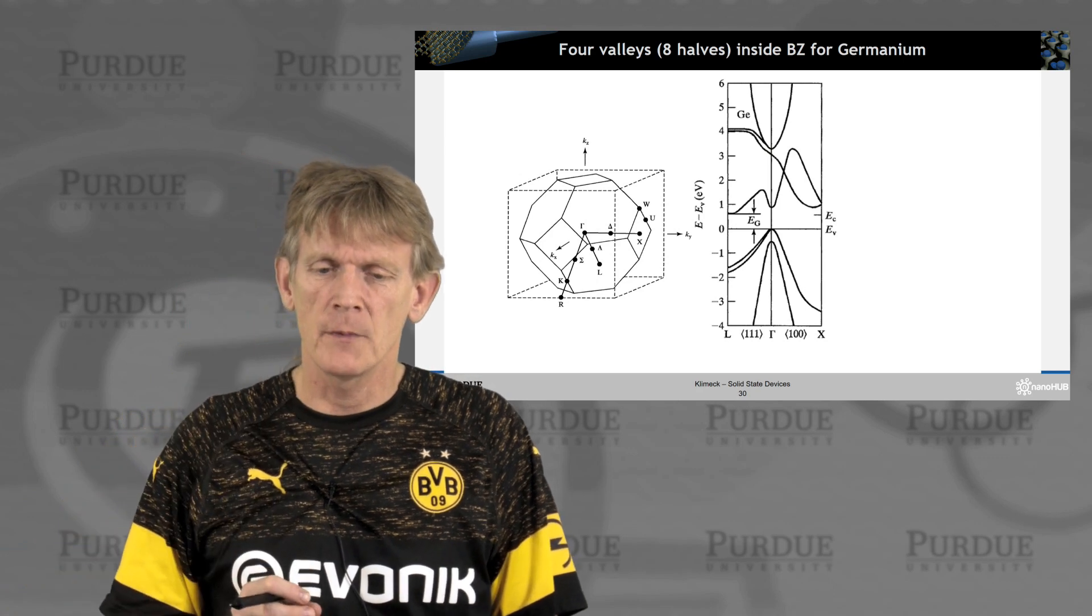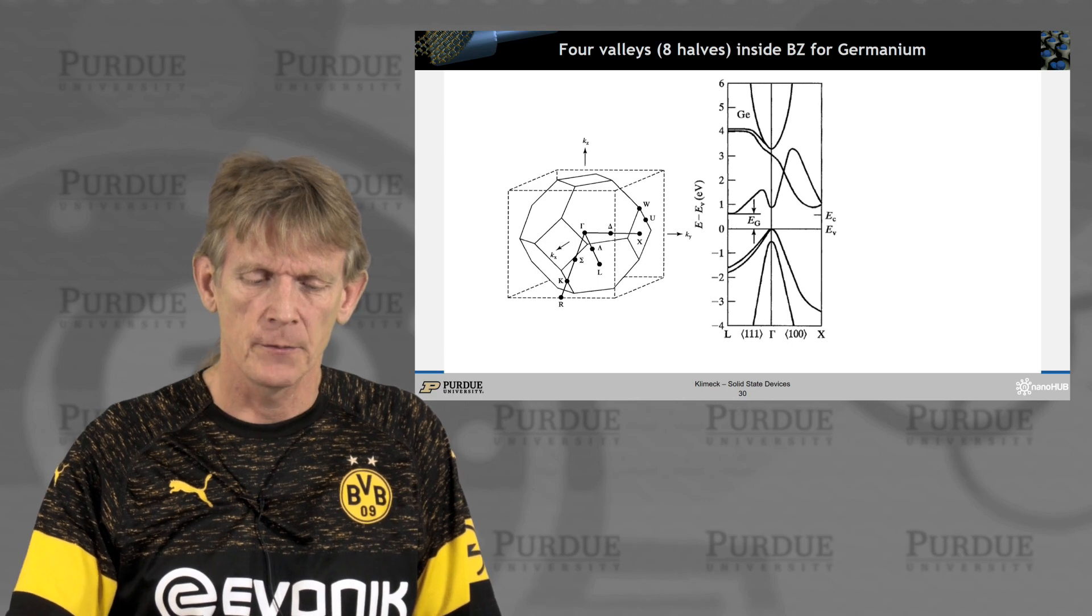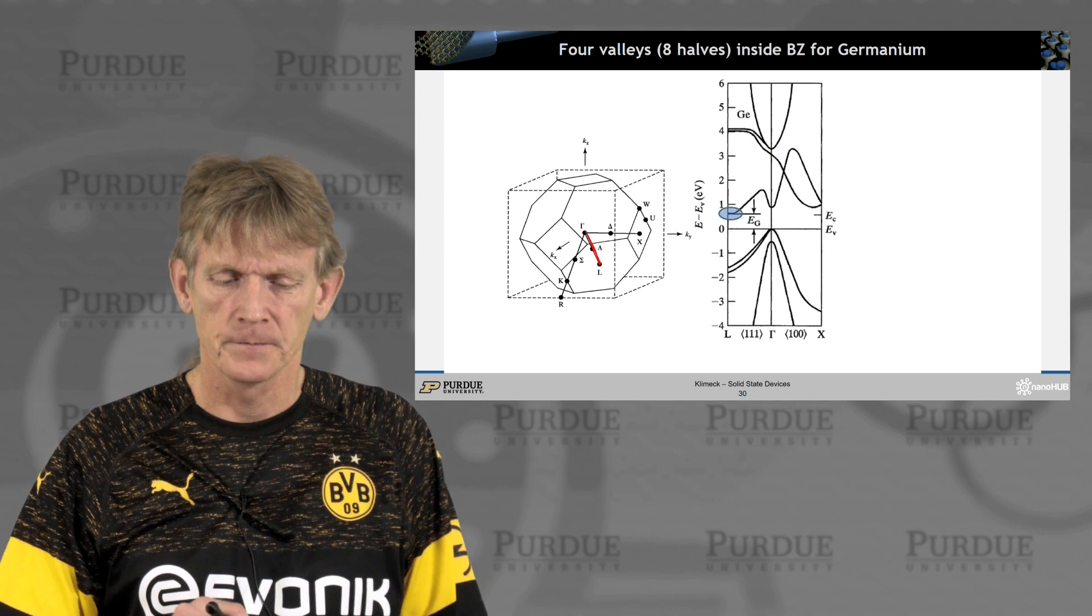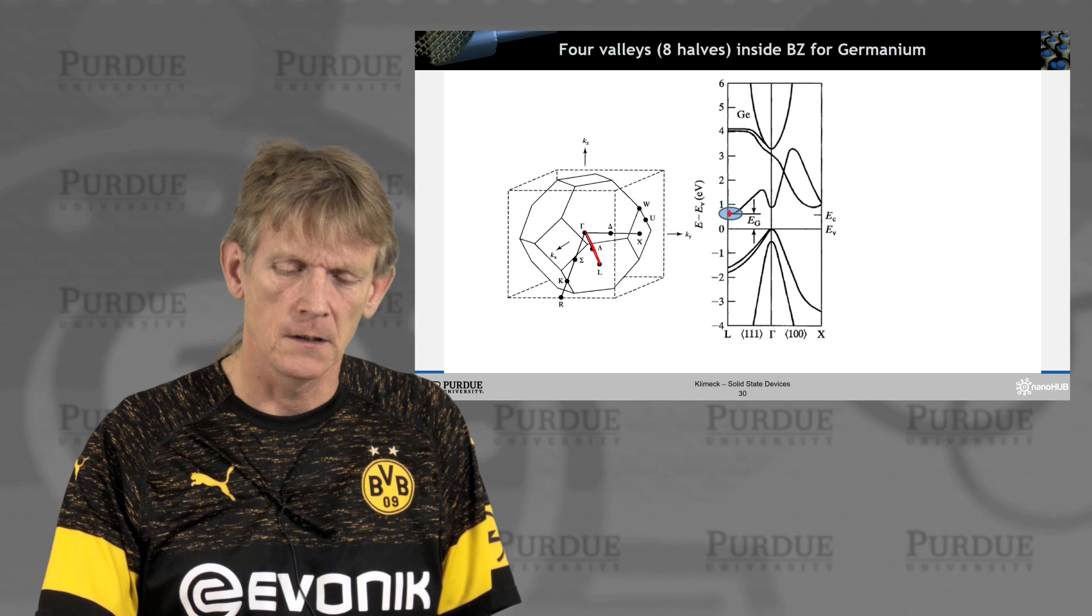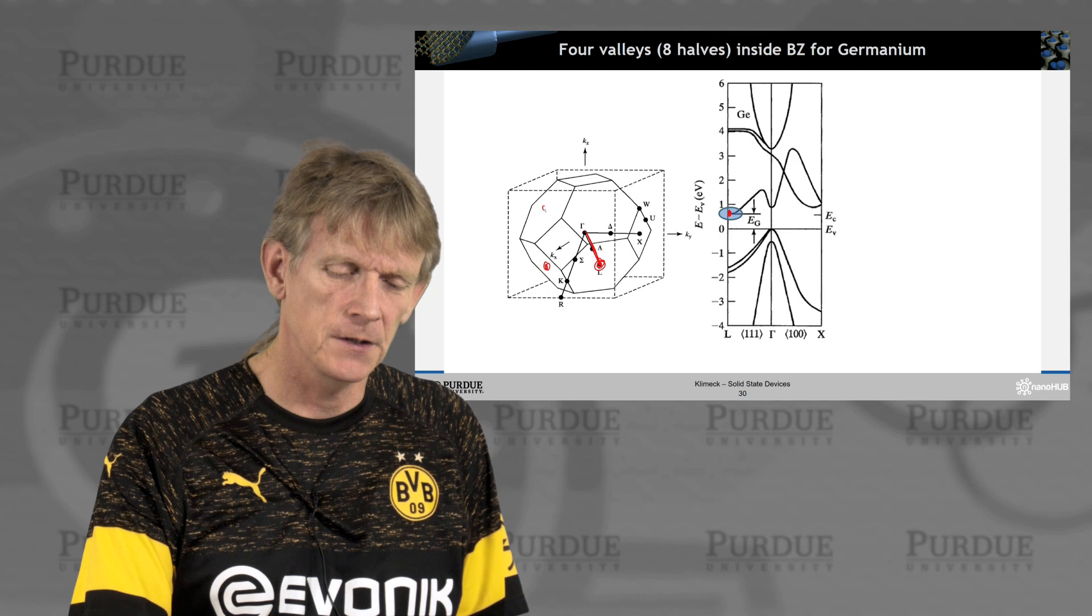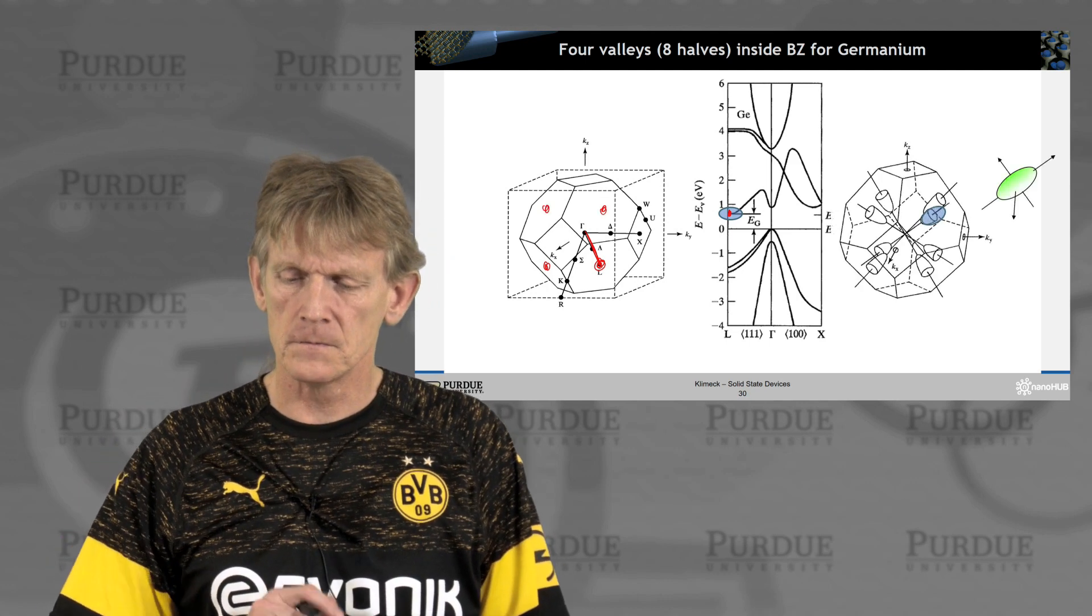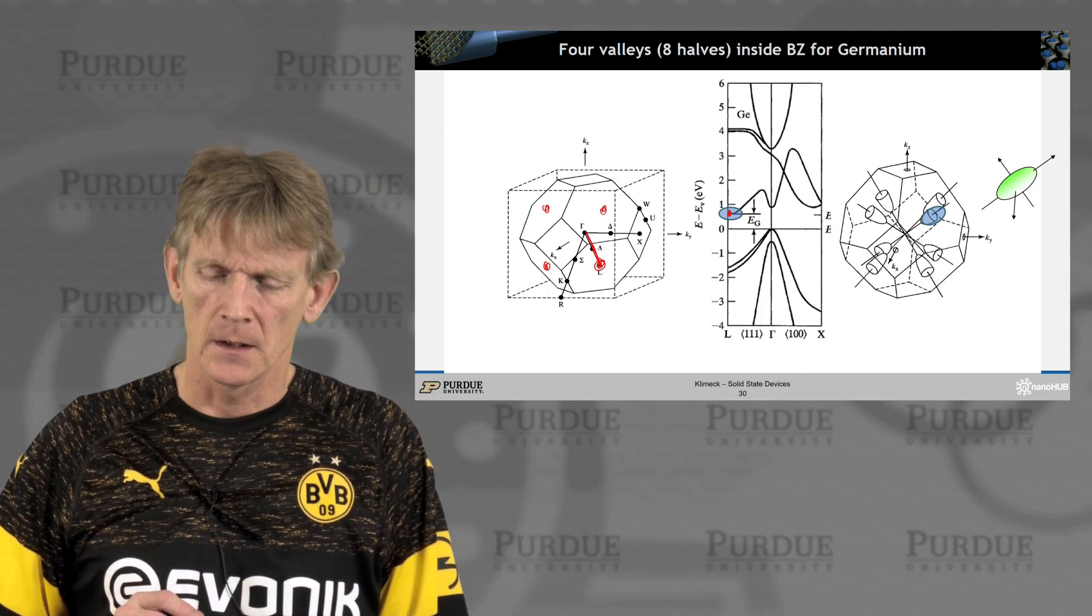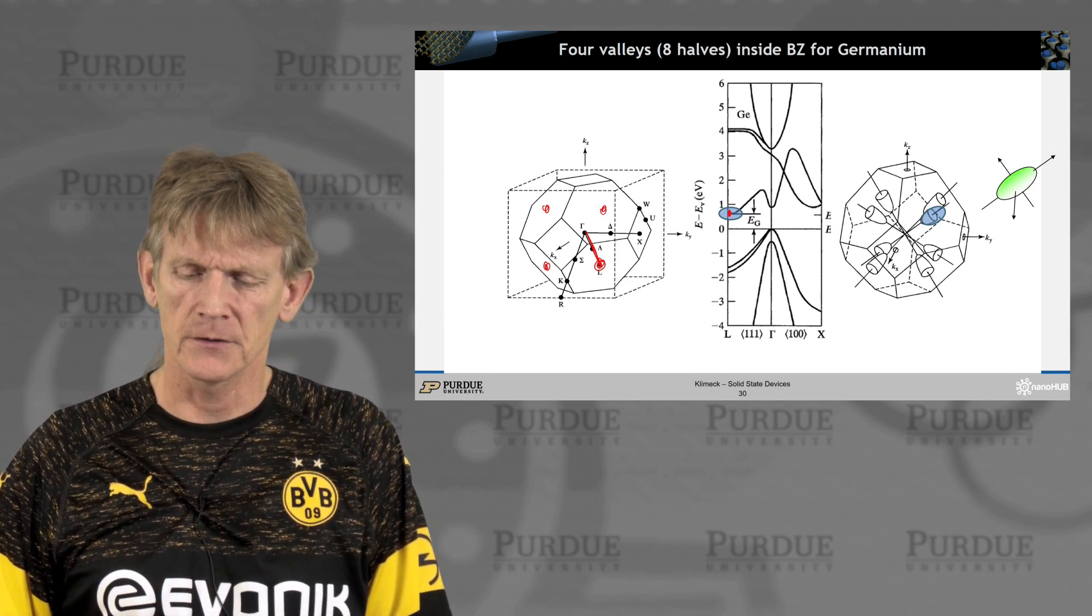So now let's look at germanium. Again, we had indicated the dispersion of germanium here along the lambda line and identified that there is a minimum here at the L point. Again, we have equivalent L points here on multiple surfaces. There's eight of those that correspond to eight of these ellipsoids. Again, half of the ellipsoid is inside the Brillouin zone. The other half is outside the Brillouin zone.